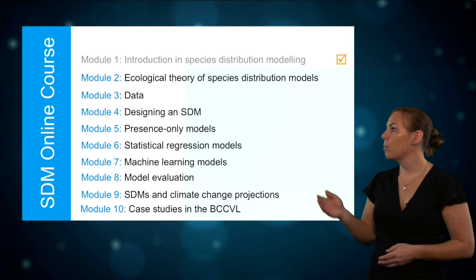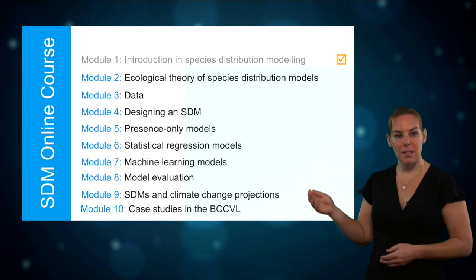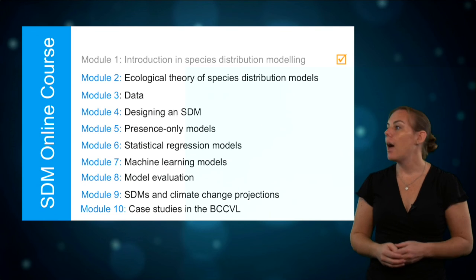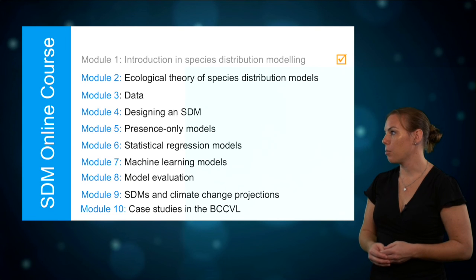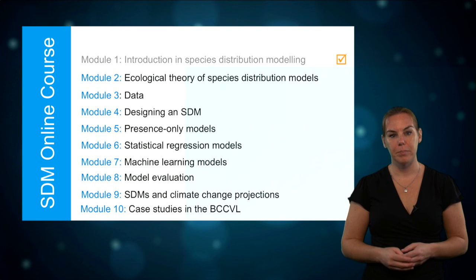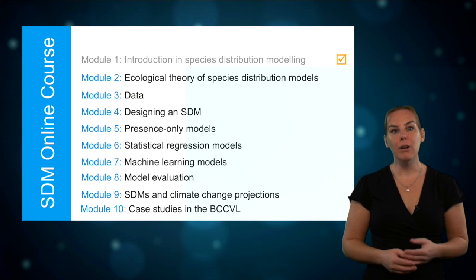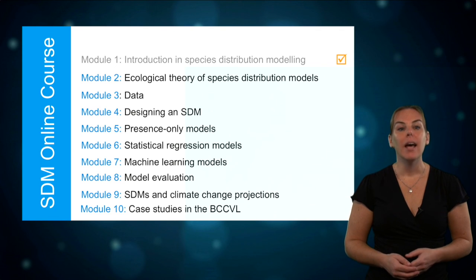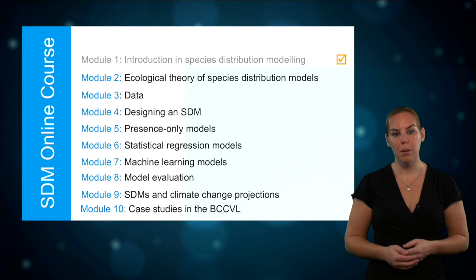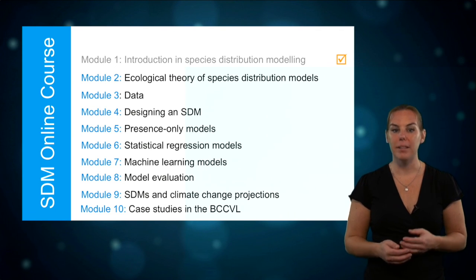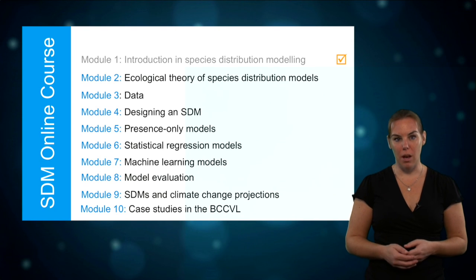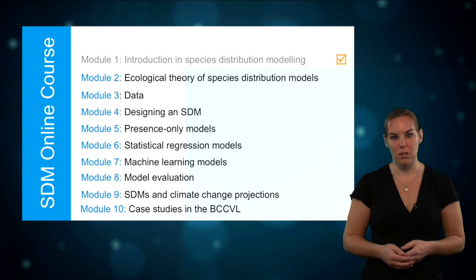Presence-only models in module 5, statistical regression models in module 6, and machine learning models in module 7. How to evaluate the outcome of a model is dealt with in module 8. And then we will focus on one implementation in particular in module 9: the effects of climate change on species distributions.